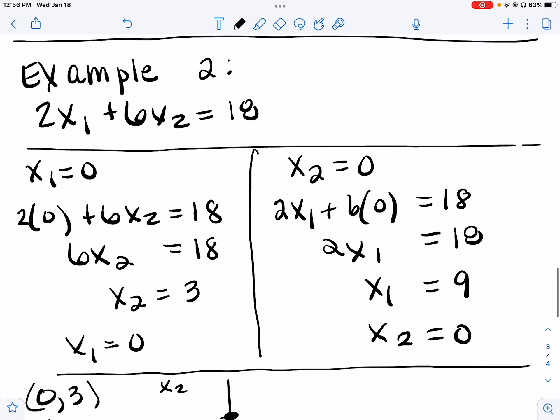For a second example, 2x1 plus 6x2 equals 18. Plug in 0 for x1. 2 times 0 is 0, so 6x2 equals 18. Divide by 6, x2 equals 3. x2 equals 3 when we plugged in x1 equals 0.